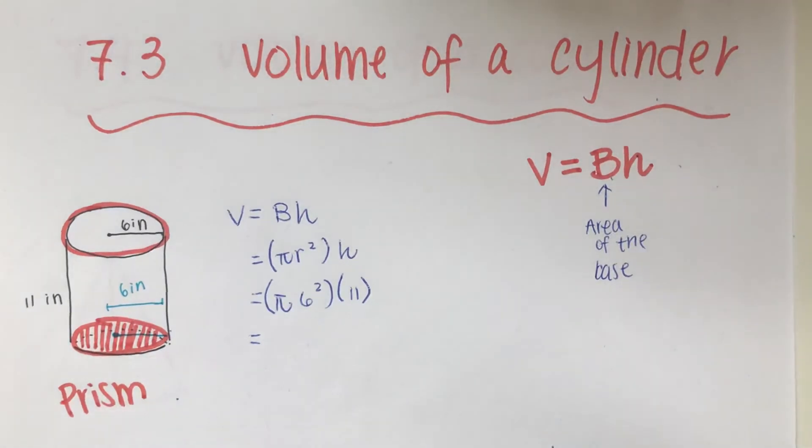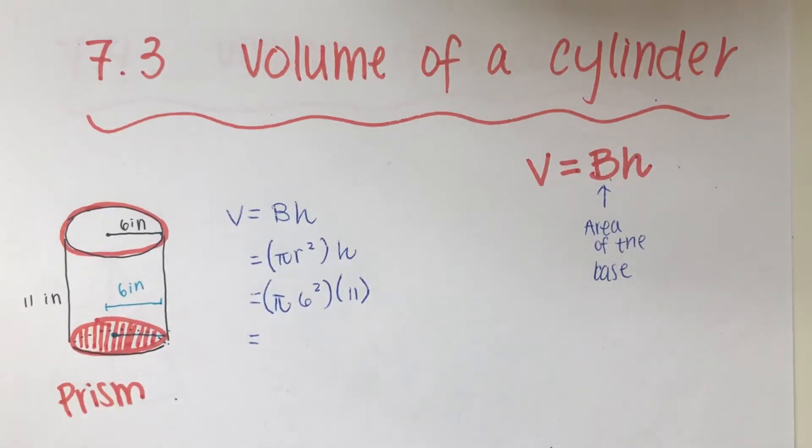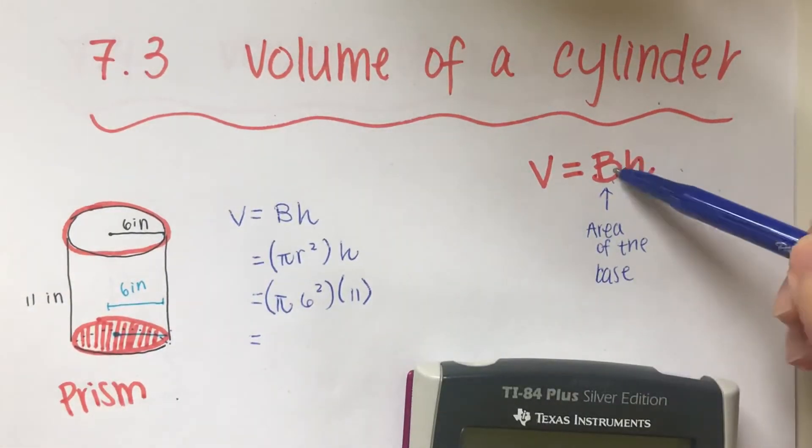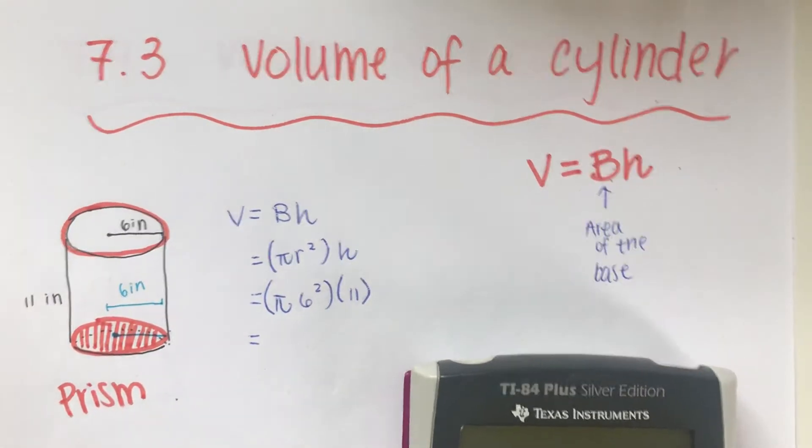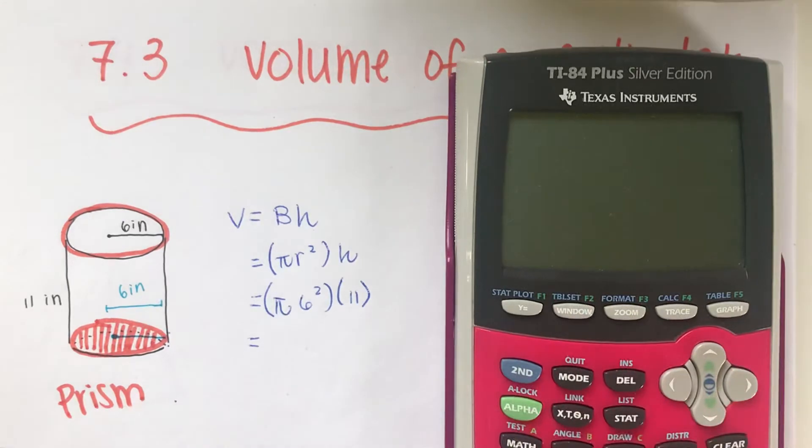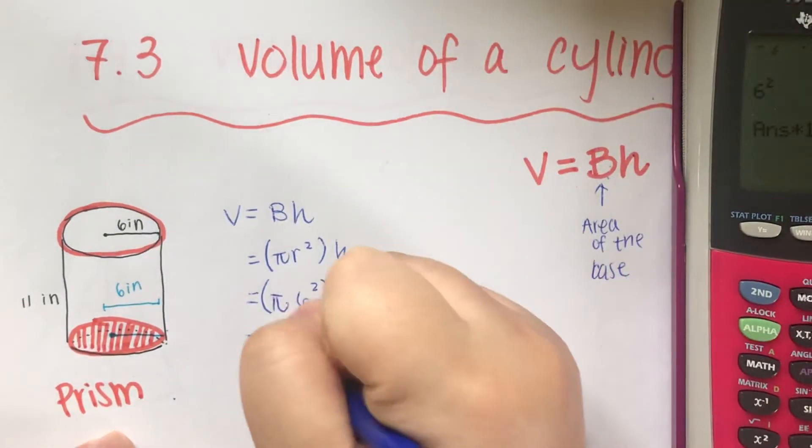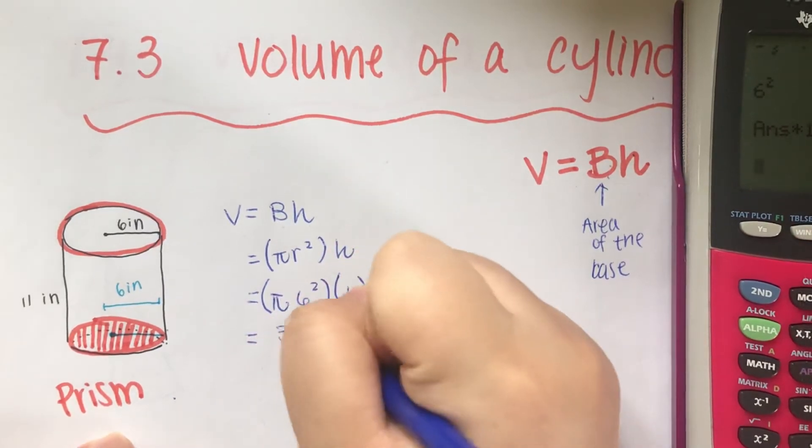Now you can memorize the formula, you could look at the formula sheet—it doesn't really matter. But if you know by heart area of the base multiplied by the height, it shouldn't be difficult at all. So that means it's 6 raised to the second power multiplied by 11.